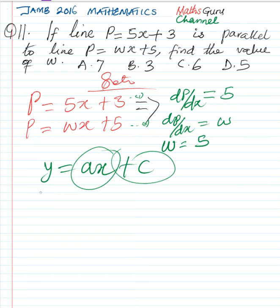So if we compare it to this, P equal to 5x plus 3, 3 is the intercept of this line, and 5 is the gradient.